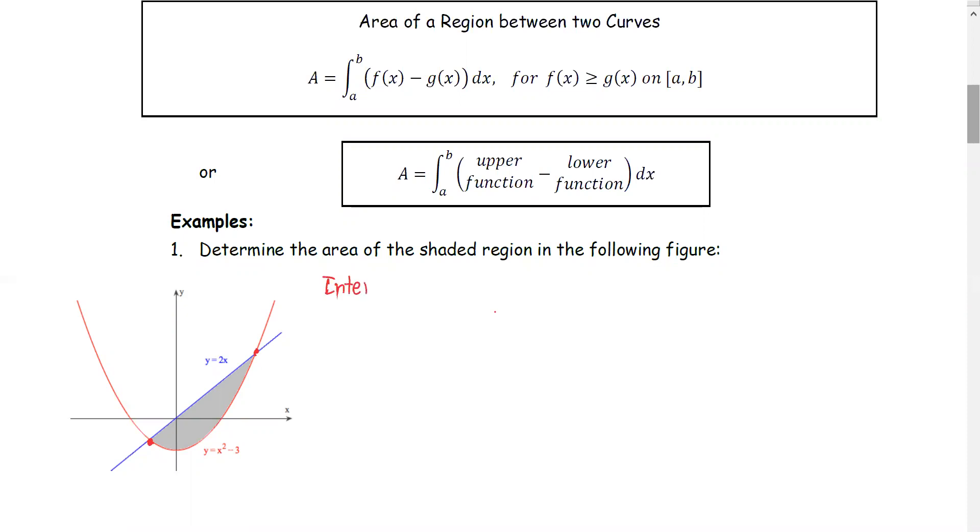To find the intersection point, we let y1 equals y2.